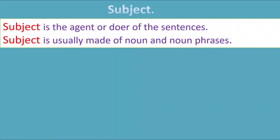Let's talk about subject now. Subject is the agent or doer of the sentence — anything that does the action of the sentence. It could be a person or it could be a thing.